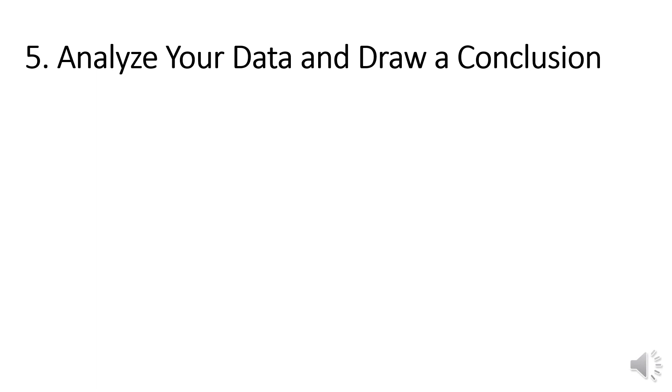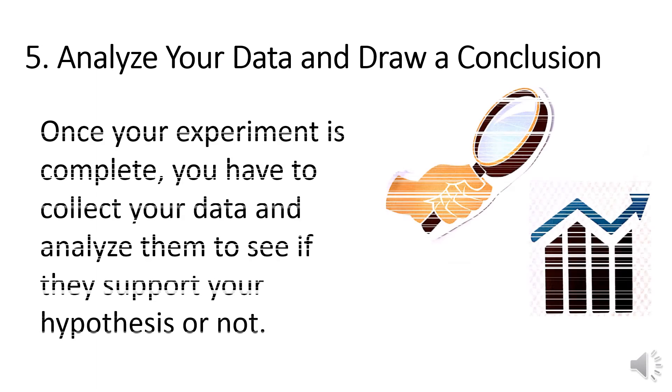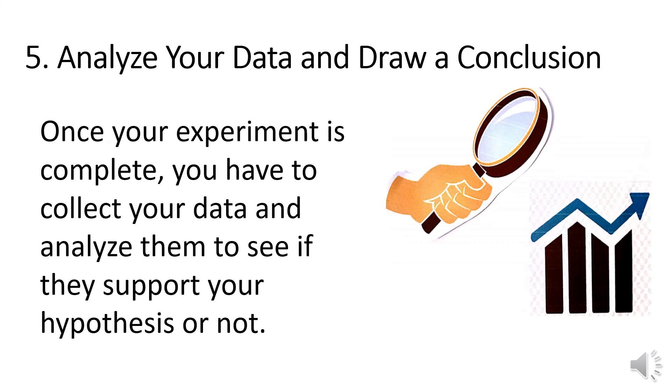Step 5: Analyze your data and draw a conclusion. Once your experiment is complete, you have to collect your data and analyze them to see if they support your hypothesis or not. Scientists often find that their predictions were not accurate and their hypothesis was not supported. In such cases, they will communicate the results of their experiment and then go back and construct a new hypothesis and prediction based on the information they learned during their previous experiments. This will start again the whole process of the scientific method until they establish their findings. But even if they find that their hypothesis was supported, they may want to conduct a new experiment to test it again in a new way.